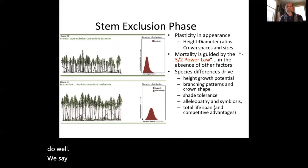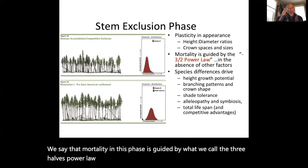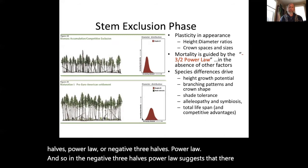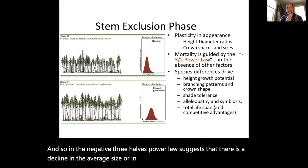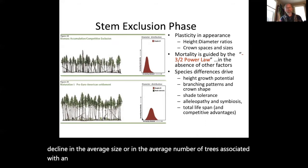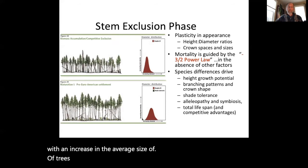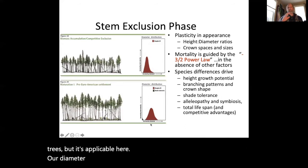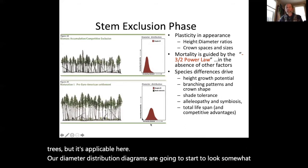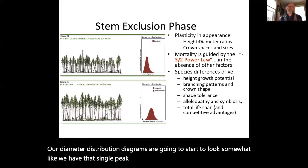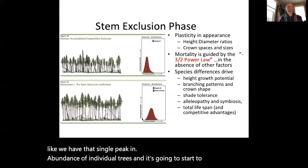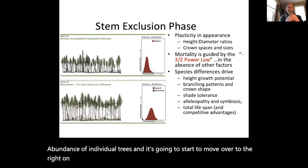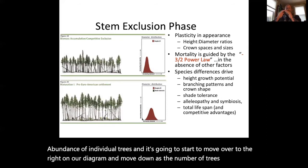Mortality in this phase is guided by what we call the negative three-halves power law, which suggests that there is a decline in the average number of trees associated with an increase in the average size of trees in a stand. This applies to a number of organisms, not just trees. Our diameter distribution diagrams are going to start to show that single peak in abundance moving to the right as tree size increases and the number of trees shrinks.